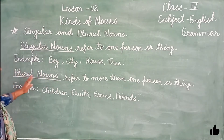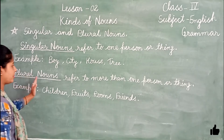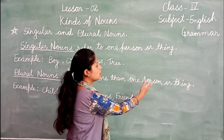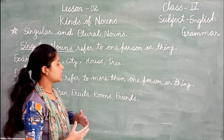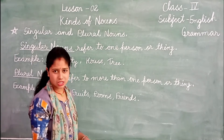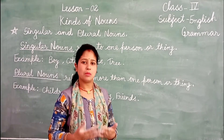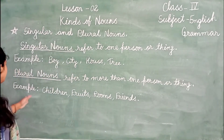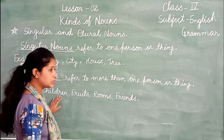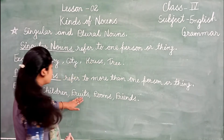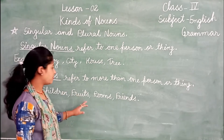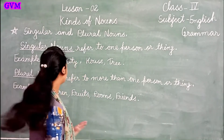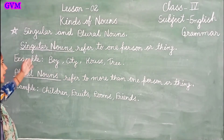The second type is plural nouns. Plural nouns refer to more than one person or thing. Where there is more than one person or thing, we use plural nouns. For example: children means many children; rooms, flowers, friends — so many of them are plural nouns.